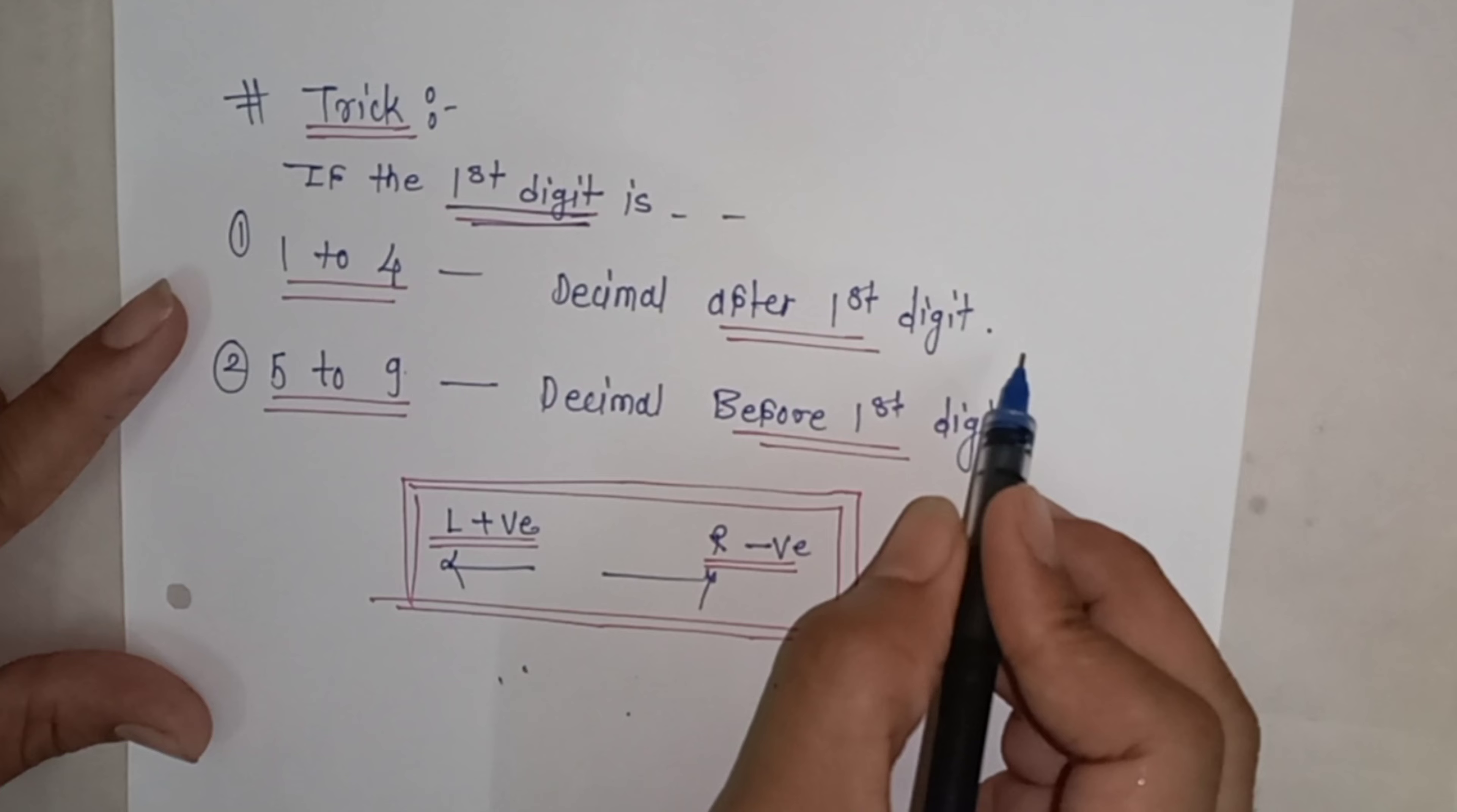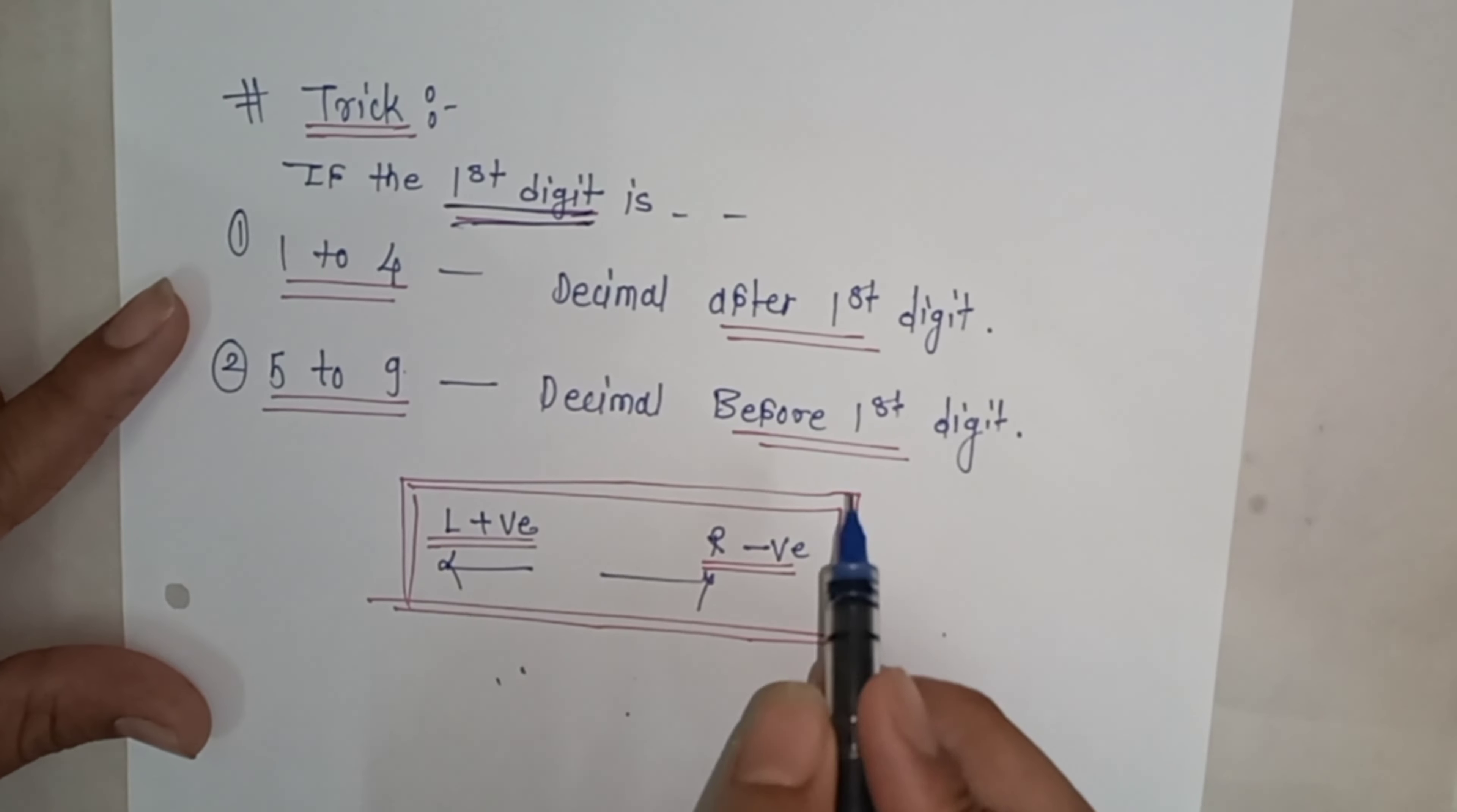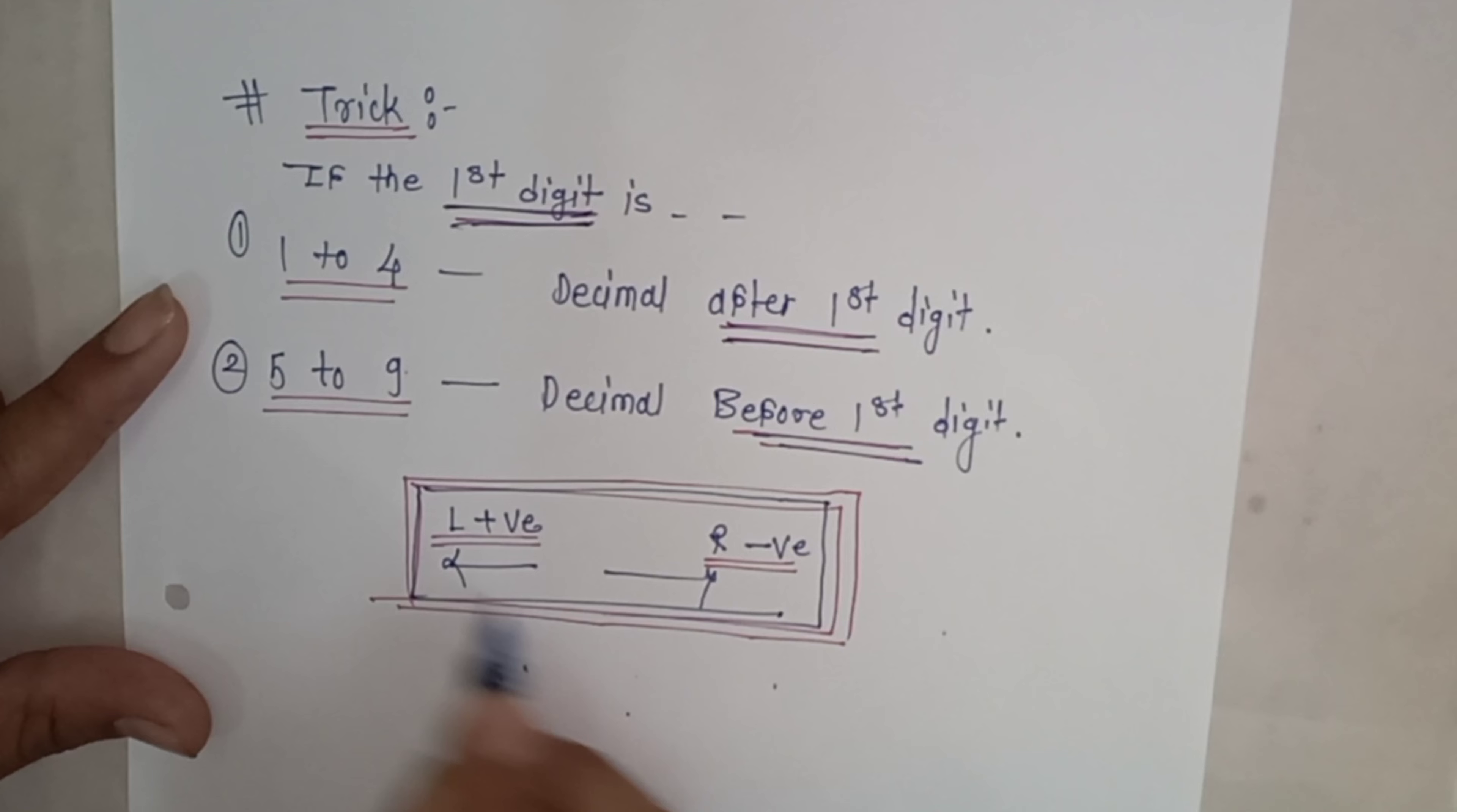The second condition is: if the first digit is between 5 to 9, then give the decimal before the first digit. Please remember this.